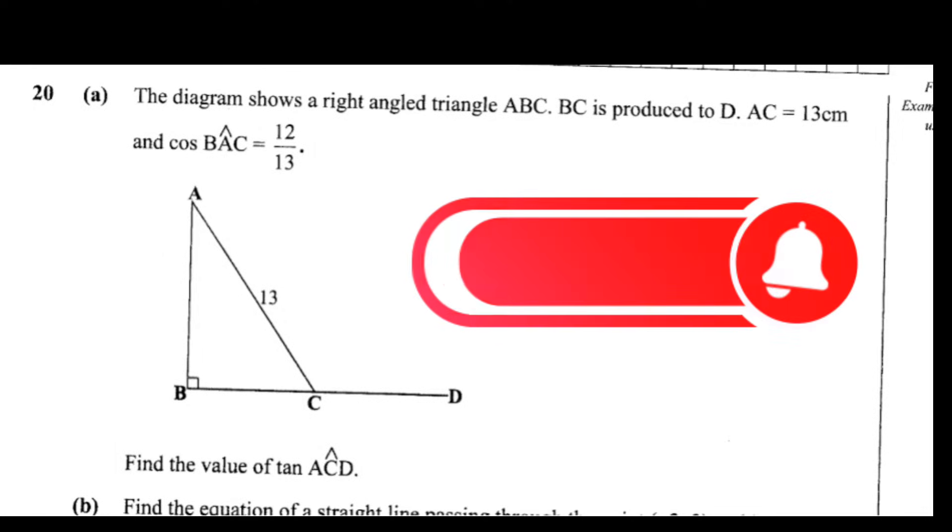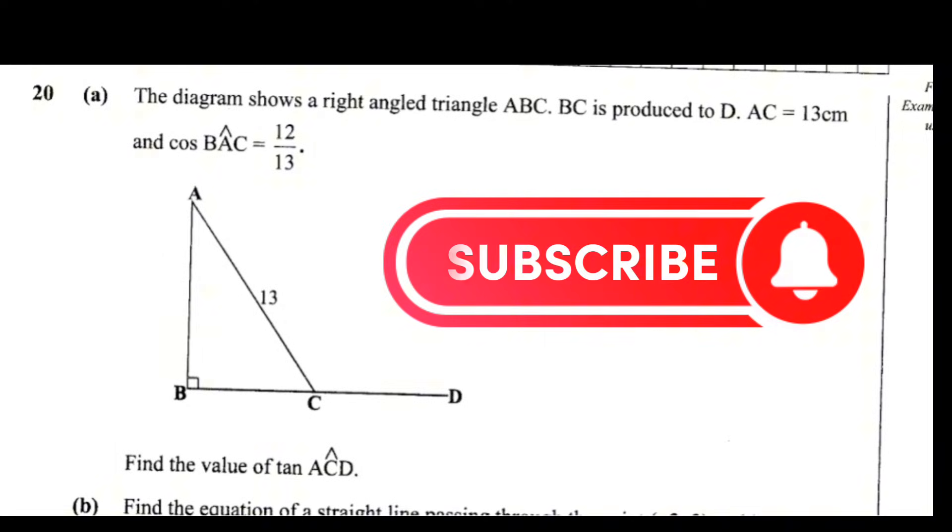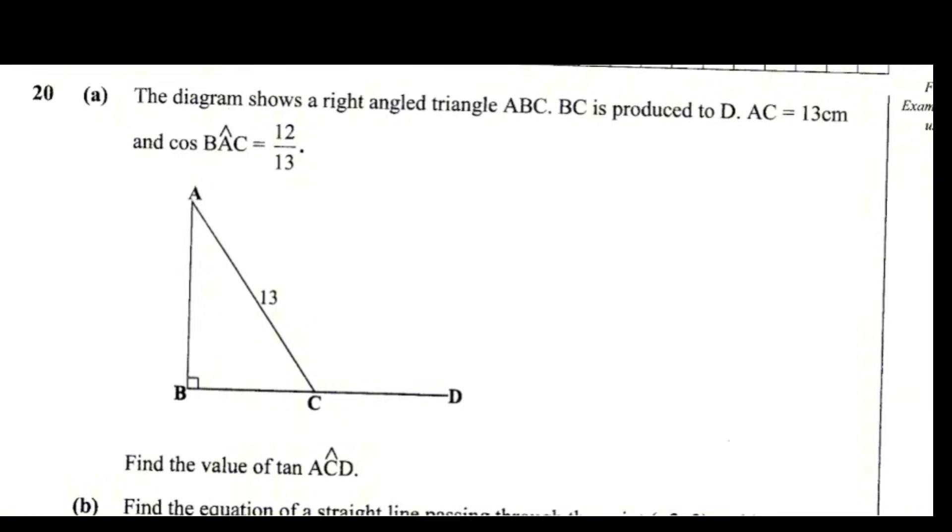The diagram shows a right angle triangle ABC. BC is produced to D. AC is equal to 13 cm, and cos BAC is equal to 12 over 13. So they have said cos BA, so an angle which is here at A, BAC.